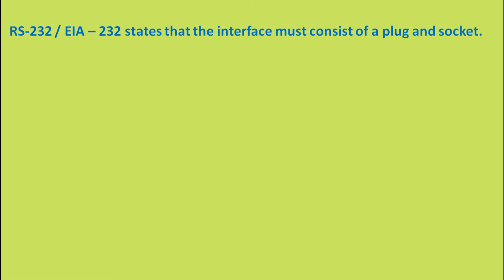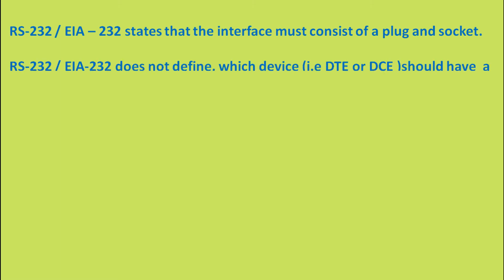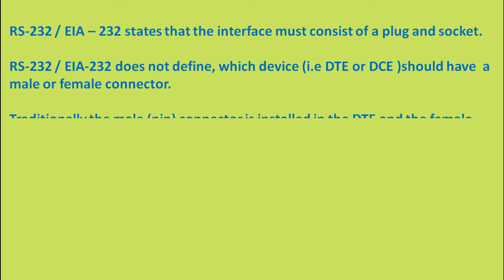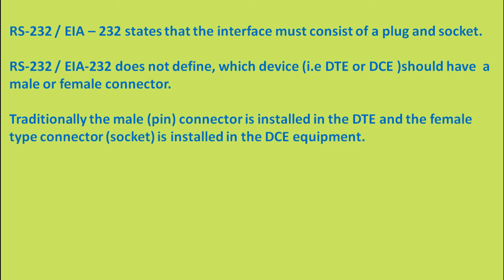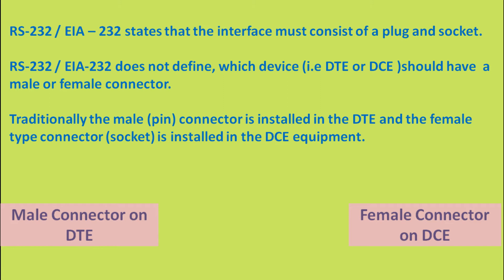RS-232 dictates that the interface must consist of a plug and socket. RS-232 does not define which device should have a male or female connector — that is, DTE or DCE — but traditionally the male connector is installed in the DTE and the female socket is installed in the DCE equipment. This is only conventional and may vary on different equipment.